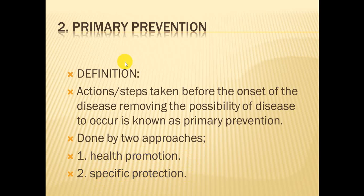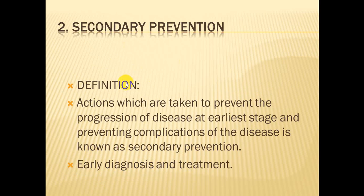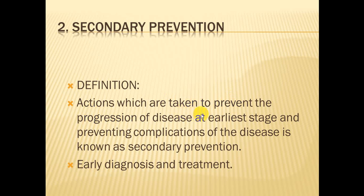We take these steps to avoid the possibility of the disease — this is known as primary prevention. The third level is secondary prevention. Secondary prevention is defined as actions taken to prevent the progression of the disease at the earliest stage and preventing complications of the disease. In secondary prevention, a person who gets sick — we try to prevent the progression of the disease at the earliest stage.